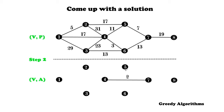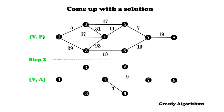In the next iteration of step two, the edge with minimum distance is 3. It won't cause any cycle, so we simply move it from P to A. Then we check step three again — P is not empty — so we go back to step two. The edge with minimum distance is now 5. Since it won't cause a cycle, we move it from set P to A.